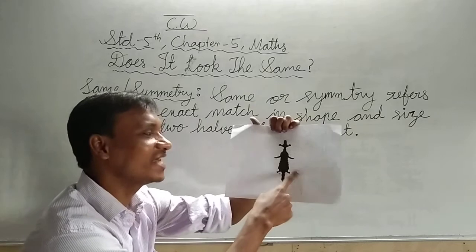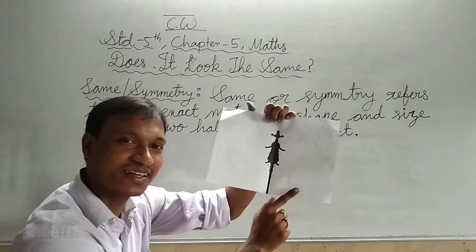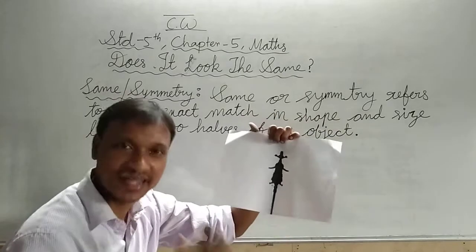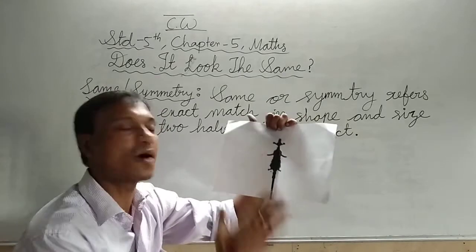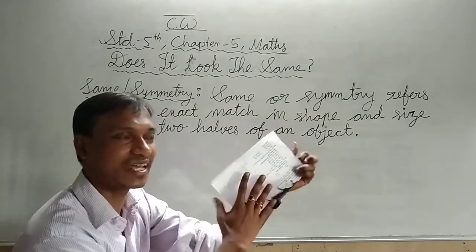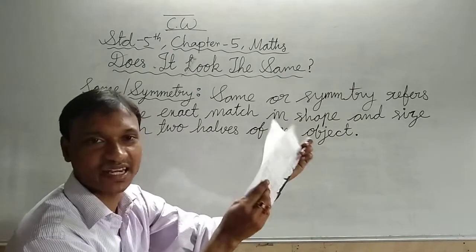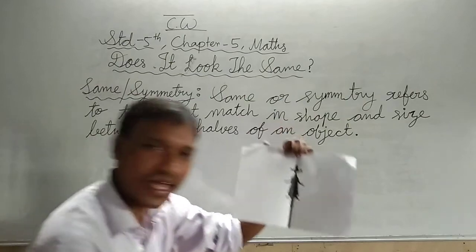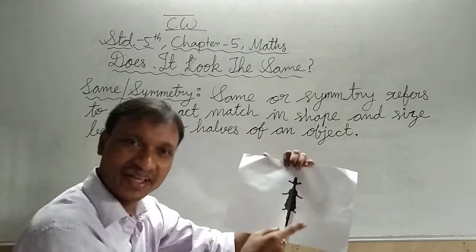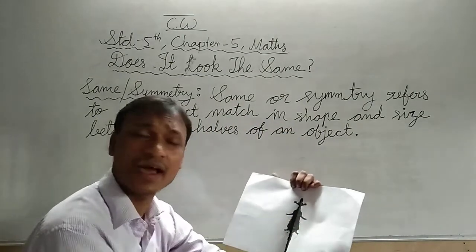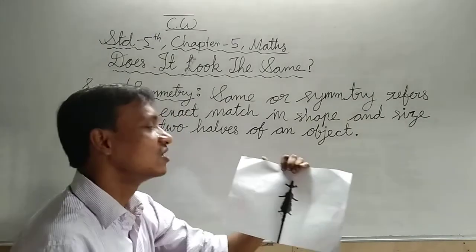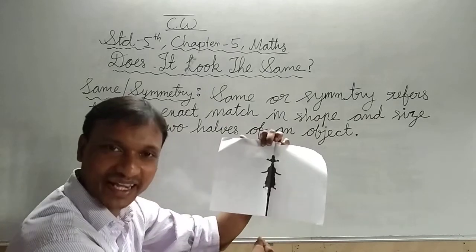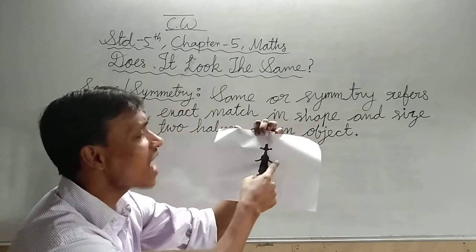Look, this looks like a rat — a mouse. It looks like a mouse, but actually it's not a mouse. This is the process: when we fold the page and press it, it will look like this. You can do it at your house. So students, if we divide it into two parts, then both halves are same to same.